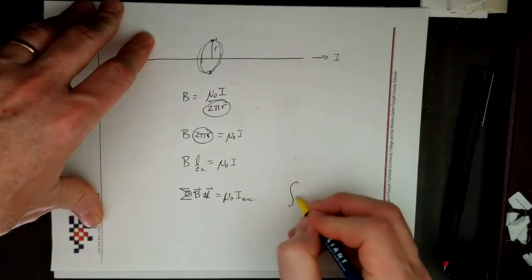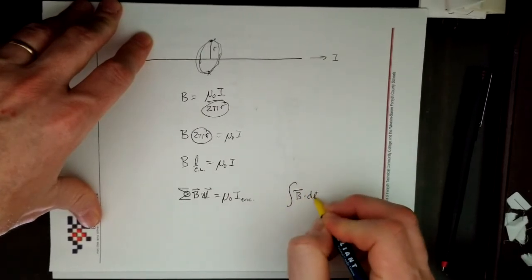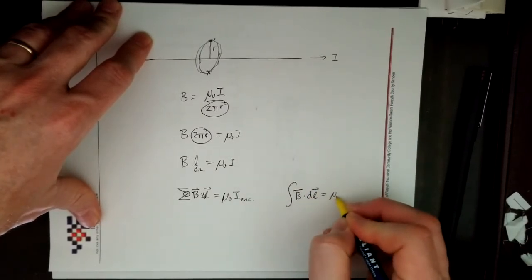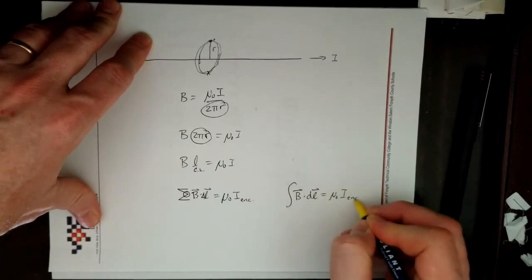Or for 252, the integral of b dot dl is equal to mu naught i enclosed. This is Ampere's law.